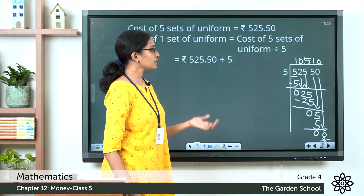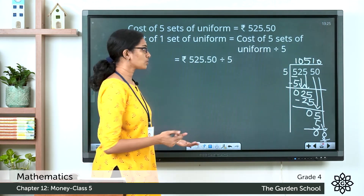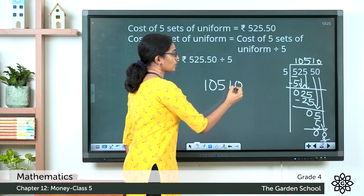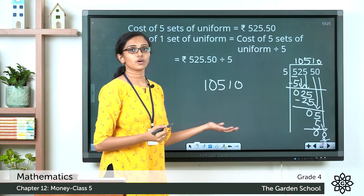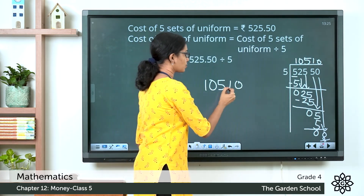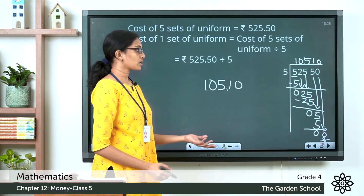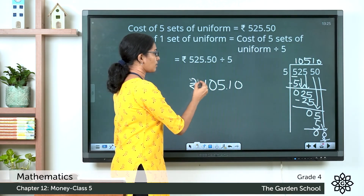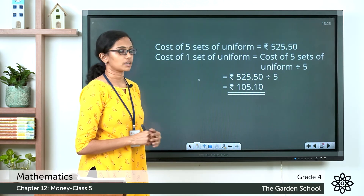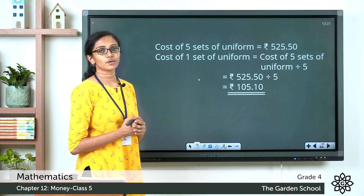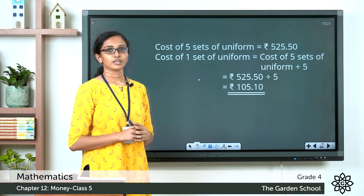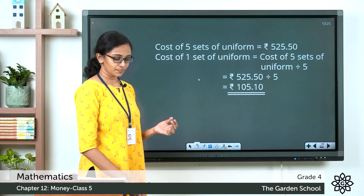The division is complete and we got the quotient as 10510. Now where do we put the dot? Count 2 places from the right to the left — 1, 2 — and put the dot there. The amount is 105 rupees 10 paise. So the cost of one set of uniform is equal to 105 rupees 10 paise.